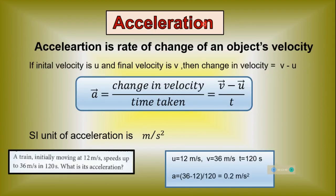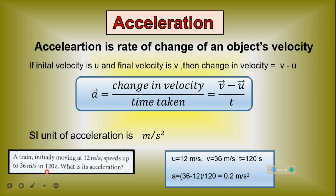Acceleration is defined as the rate of change of an object's velocity. If initial velocity is u and final velocity is v, then change in velocity is v minus u, and acceleration equals change in velocity divided by time taken: a equals (v minus u) divided by t. These are vector quantities. The unit of acceleration is meters per second squared. Example: a train initially moving at 12 meters per second speeds up to 36 meters per second in 120 seconds. Acceleration equals (36 minus 12) divided by 120, which equals 0.2 meters per second squared.